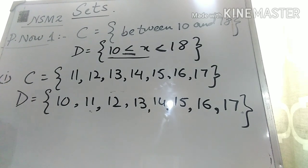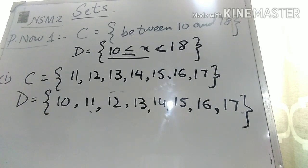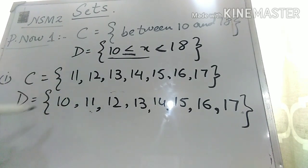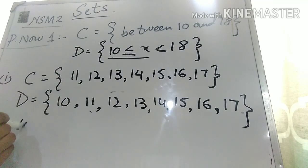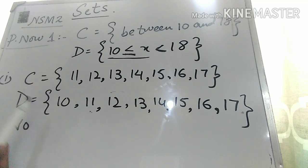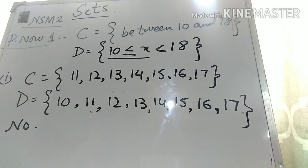In part 2, they ask: do C and D contain the same elements? If not, explain why. No, they do not contain the same elements, because in set D the element 10 is present, while in set C the element 10 is not present. So they do not contain the same elements. This concludes Practice Now 1.